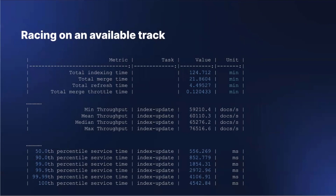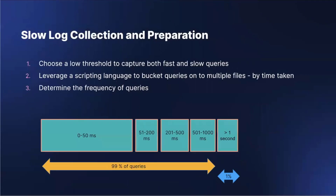Now we have the tools and the queries. Before connecting them together, we need to consider how to organize these queries. While collecting slow logs, focus on both the fast and slow queries — this is the only way to replicate the production rhythm. Running only the slow queries makes it an apples to oranges comparison. Our SRE team wrote a Python script to parse the slow log JSON files and bucket these logs based on time taken. This gave another key input for the test: the frequency in which queries hit the server.